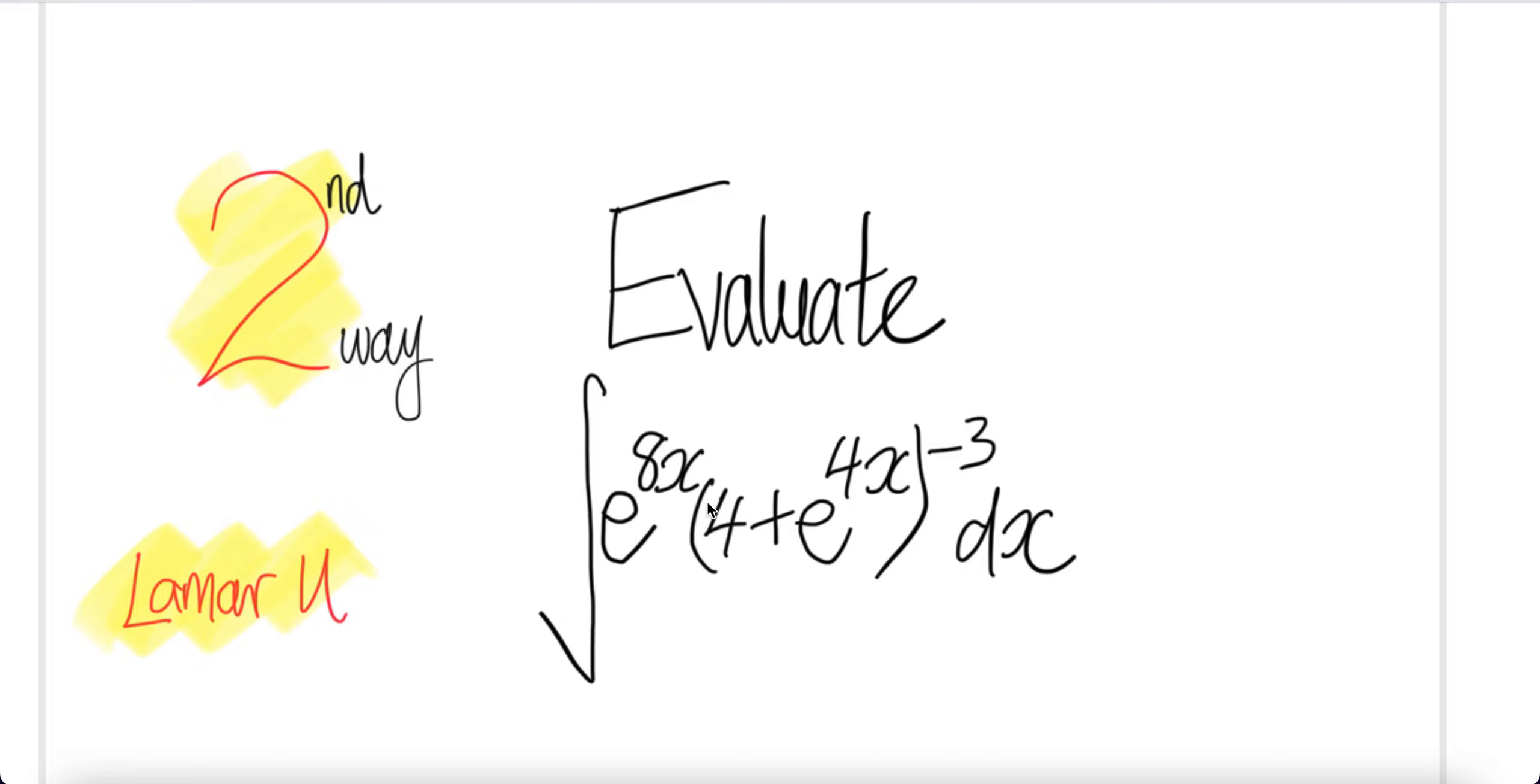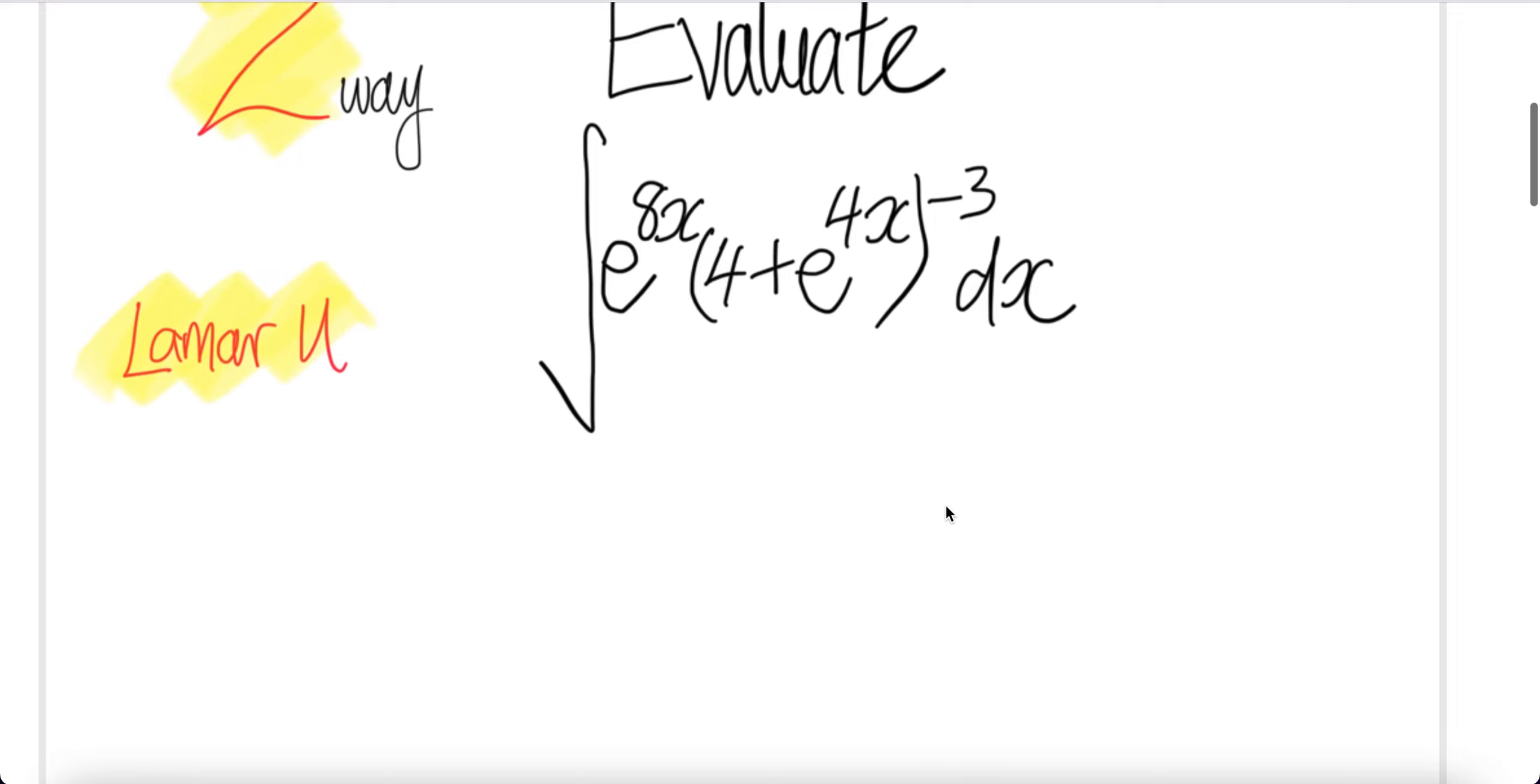Problem from La Manusite. Let's do this in a second way. Evaluate integral e to the power of 8x times 4 plus e to the power of 4x to the power of negative 3.